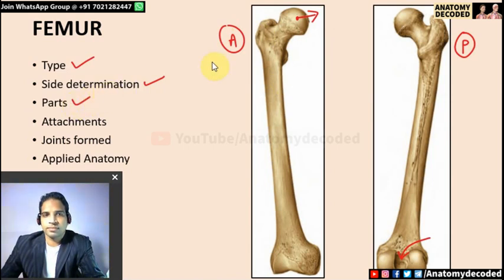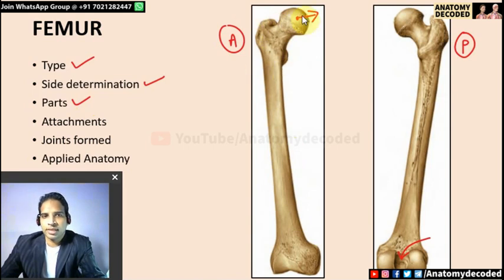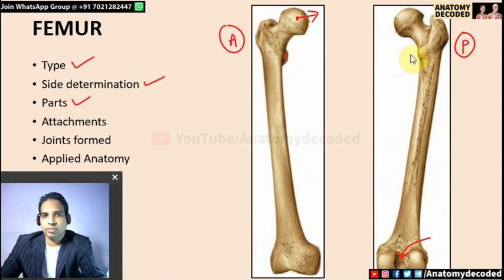Femur has three parts: upper end, shaft, and lower end. The upper end has: the head, neck, greater trochanter, lesser trochanter, intertrochanteric line on the anterior aspect, and intertrochanteric crest on the posterior aspect. The intertrochanteric crest has an elevation called the quadrate tubercle.